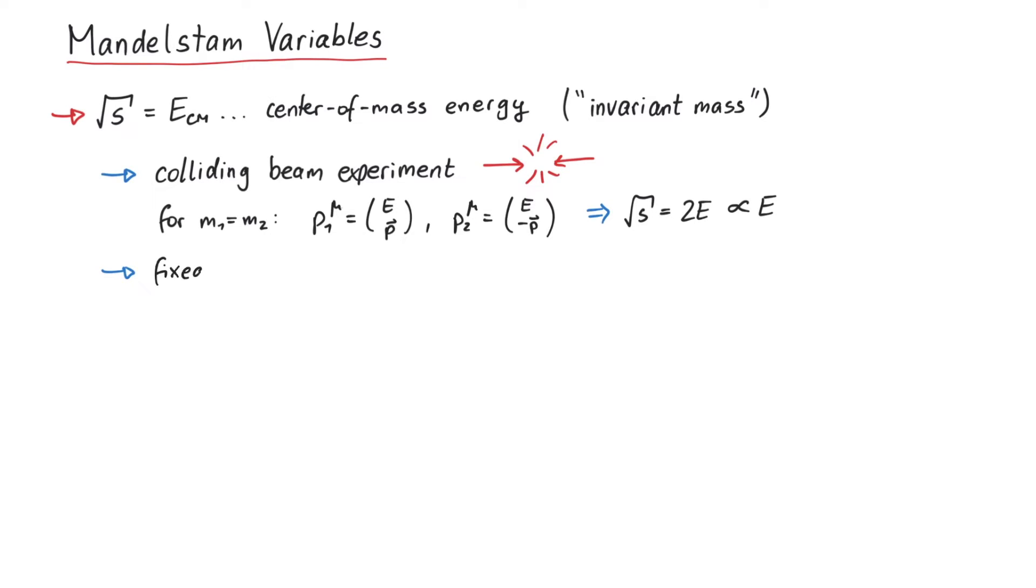Second, let's assume a so-called fixed target experiment. Here, p2 is at rest and p1 moves towards it. Again, assuming equal masses for simplicity, the square root of s is equal to the square root of 2m times E plus m, which is proportional to the square root of E. We recognize here the well-known fact that for fixed energy, the center of mass energy is larger in a collider experiment than in a fixed target experiment.